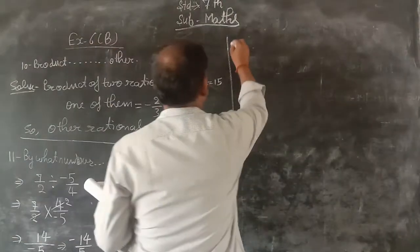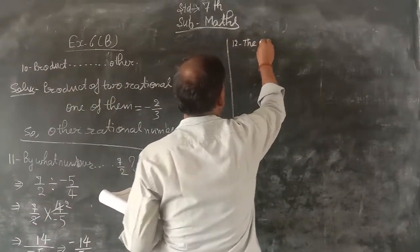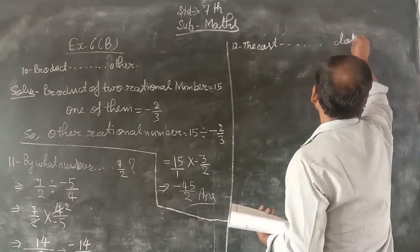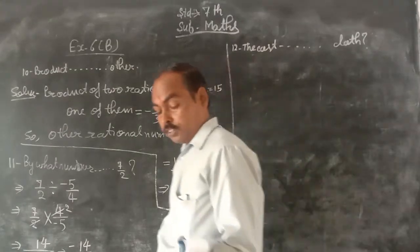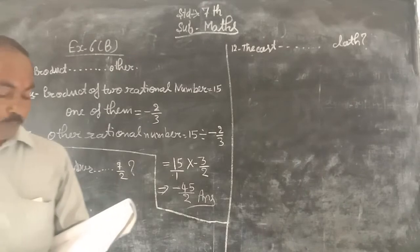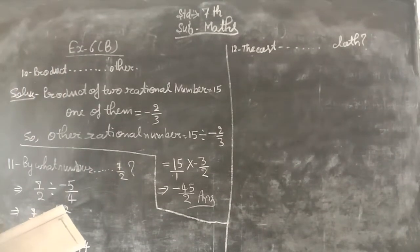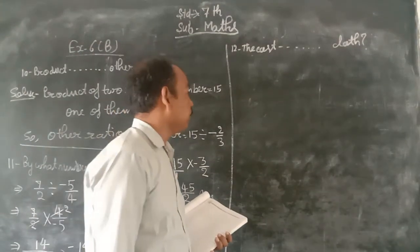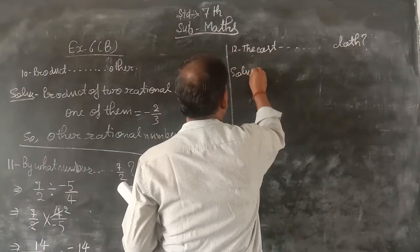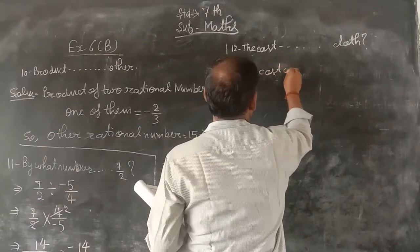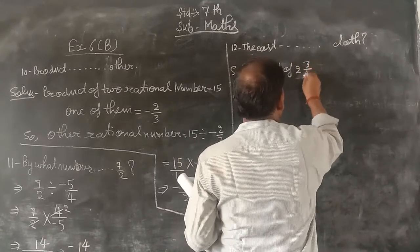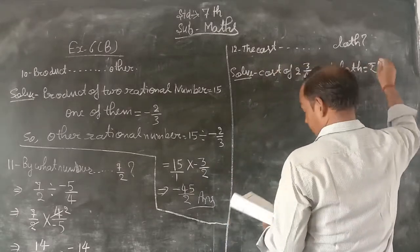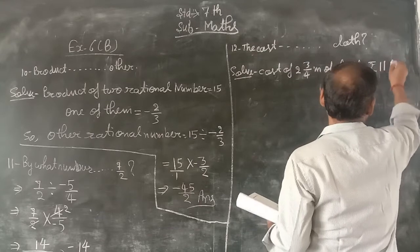Next, number 12. The cost of 2 and 3 upon 4 meters of cloth is rupees 1166. Find the cost of one meter of cloth. The cost of 2 and 3 upon 4 meters of cloth is equal to rupees 1166.